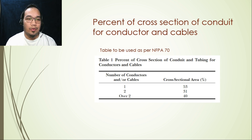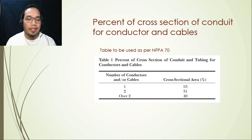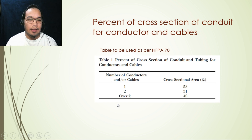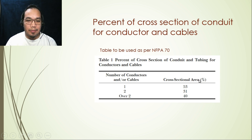Now that we know the types of cables and conduits used in fire alarm installation, we can look at the requirements of NFPA 70 for the quantity of cables permitted inside a conduit. There is a table in NFPA 70 that states: if you have one conductor or cable, the permitted cross-sectional area fill is only 53 percent — meaning only 53% of the conduit's cross-sectional area can be filled.